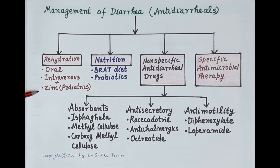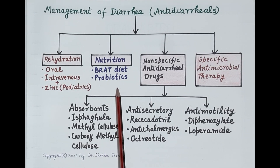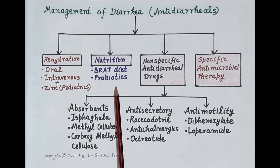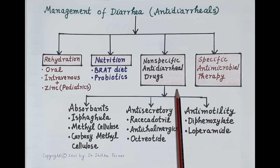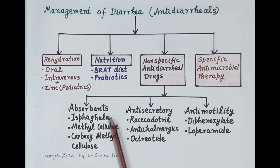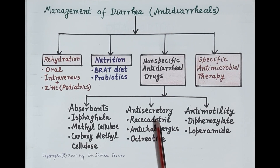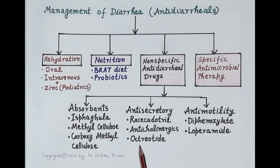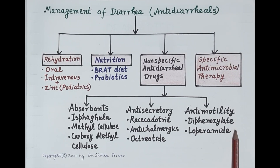Zinc supplementation has been found to be very useful in pediatric patients. Proper nutrition should also be provided — a low fiber, bland BRAT diet is recommended, and probiotics can be added to the diet. Non-specific antidiarrheal drug therapy for symptomatic relief consists of absorbents, antisecretory drugs, and antimotility drugs. Absorbents include ispaghula, methylcellulose, and carboxymethylcellulose. Antisecretory drugs include racecadotril, anticholinergics like atropine, and octreotide.